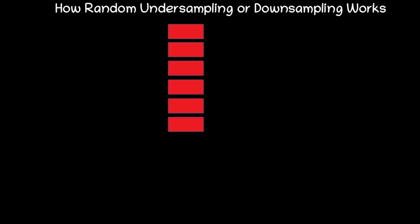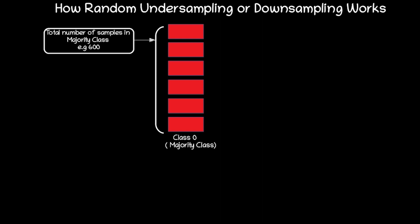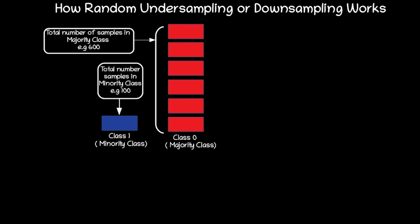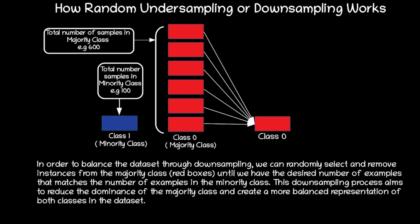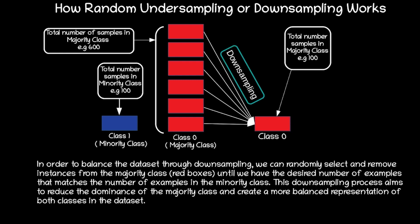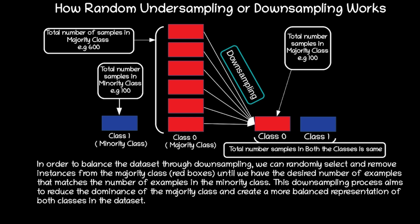Now let's move on to how random undersampling or downsampling works. Consider a scenario where we have a bunch of red boxes belonging to the majority class, which is class 0, with a total of 600 samples. The blue boxes represent the minority class, class 1, with 100 samples. In order to balance our dataset through downsampling, we randomly select and remove instances from the majority class until we have a desired number of examples matching the minority class count. This downsampling process reduces the dominance of the majority class. Now the total number of samples in both classes is the same: 100.